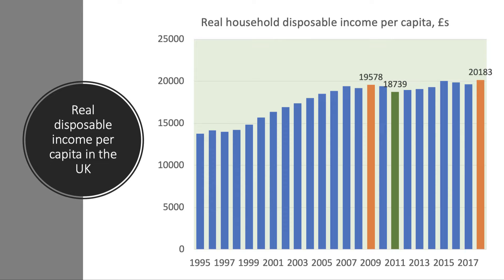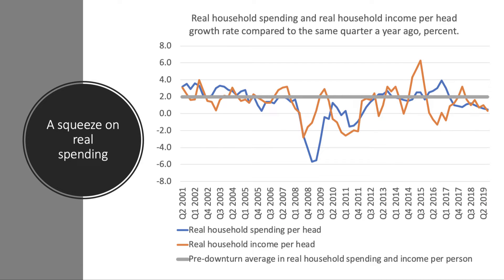For millions of people, real incomes after direct taxes and welfare benefits have actually gone down over the period. This of course leads to a fall in real purchasing power, meaning that less can be spent on goods and services. Utility bills and other expenses, including rents and mortgages, become much more difficult to afford. And this drop in real incomes may help to explain the increase in household debt over recent times.